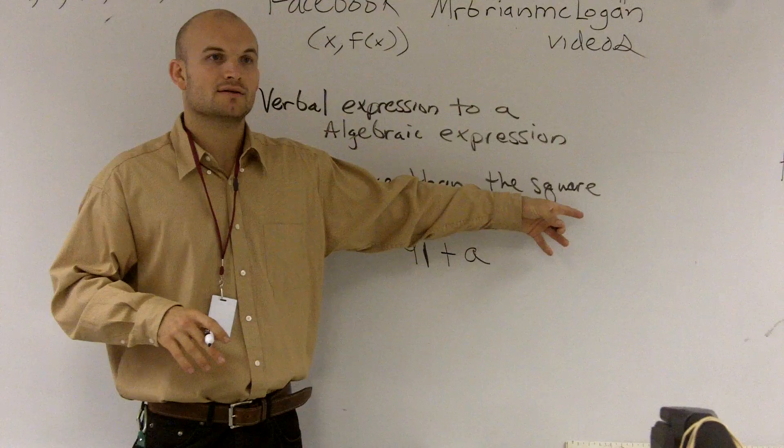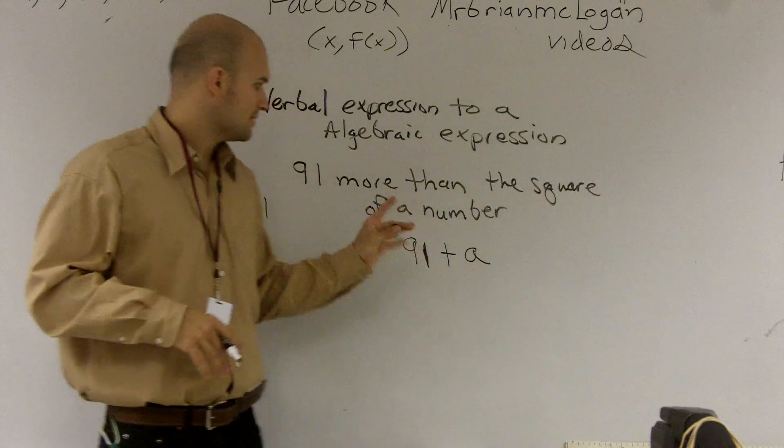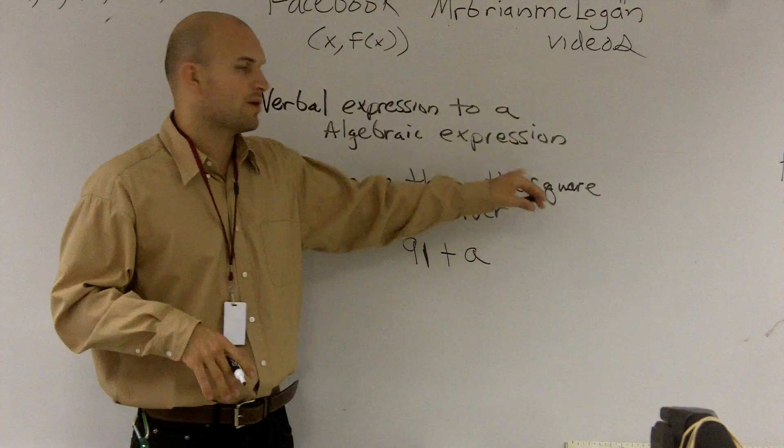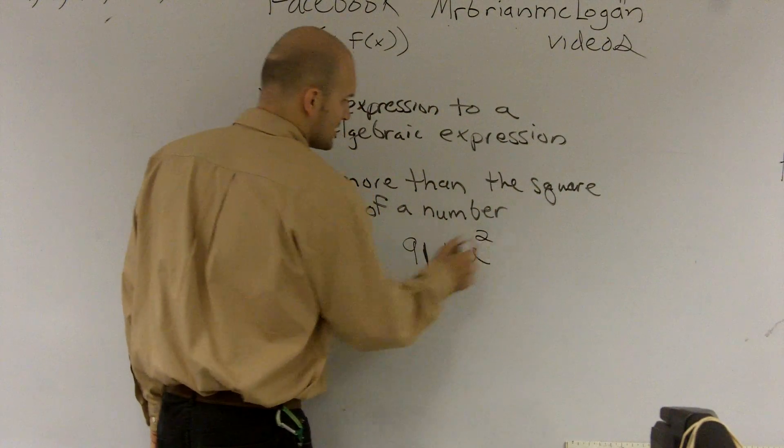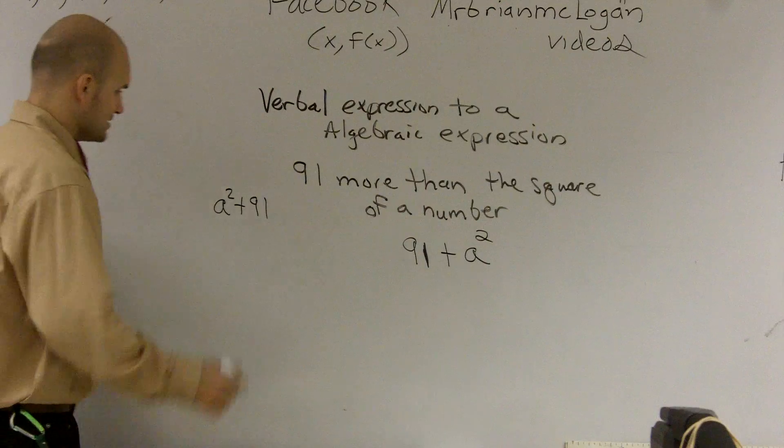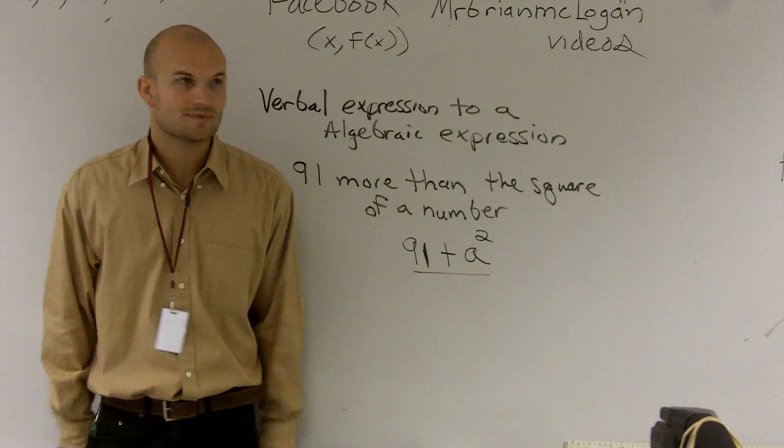So the square, and we'll explain later why the second power is called the square, but when it says more than the square of a number, that means it's raised to the second power. So that would be a number raised to the second power. And when I go and look at your answer, very good. 91 plus A squared is the correct answer. So very good job. Does everybody have any questions on this?